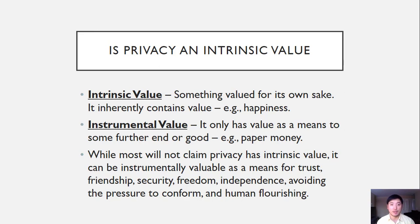Whereas things with intrinsic value inherently have value in and of themselves, regardless of whether you can use them for some other purpose. Most philosophers will not claim that privacy has intrinsic value. However, most hold that it has instrumental value — it is still valuable, but in an instrumental way. For example, privacy helps establish trust and friendship. If you trust someone or have a meaningful friendship, they would respect your privacy if you wanted some information or time to be private.